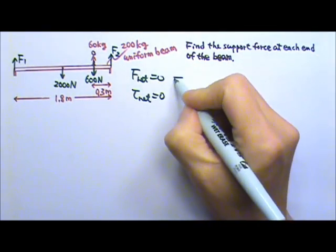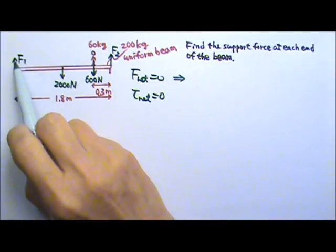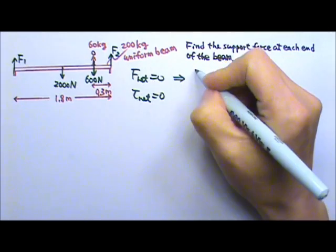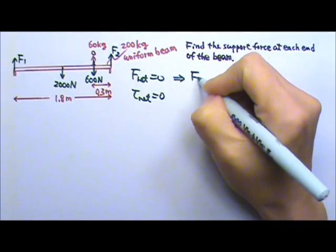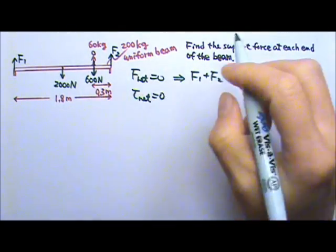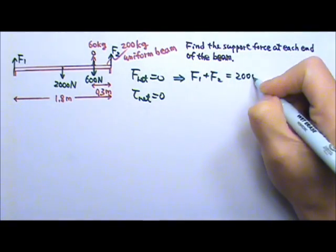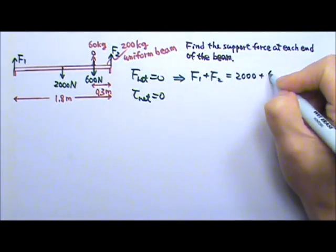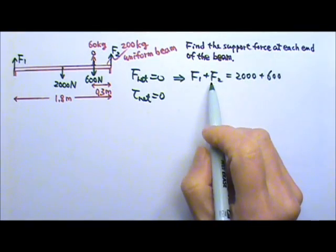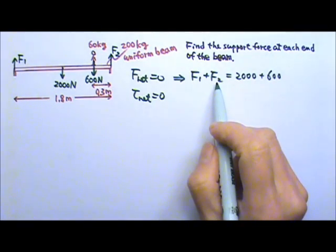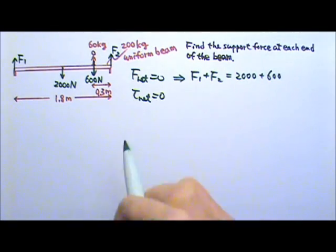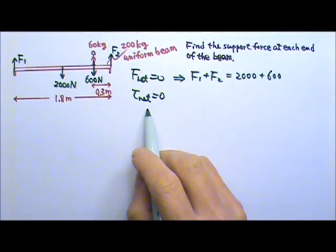The net force is zero, which means the upward forces must equal the downward forces. So we must have F1 plus F2 equal to 2,000 plus 600. We have one equation with two unknowns, so we cannot find F1 or F2 yet. We need one more equation, so we need to write the net torque equals zero.